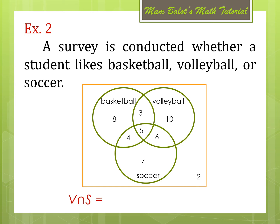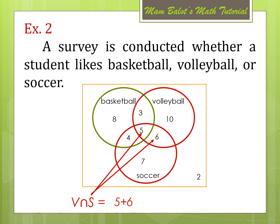How about if we find V intersection S? These are the students who both love volleyball and soccer. Focusing on the intersection of the volleyball and soccer circles, we find the numbers 5 and 6. So, V intersection S is equal to 5 plus 6, which is equal to 11.